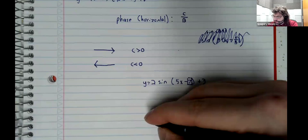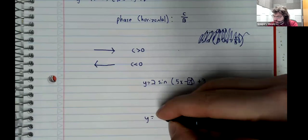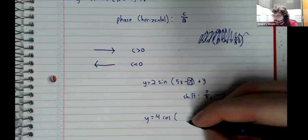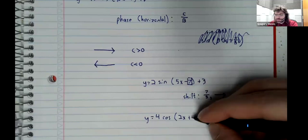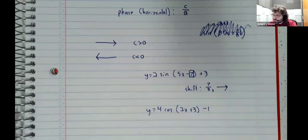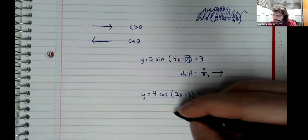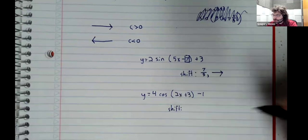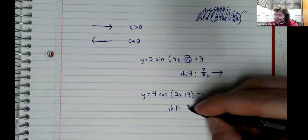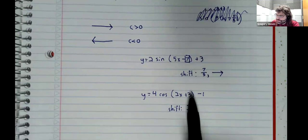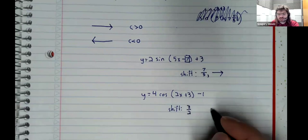Conversely, if we had something like this, the shift is 3 over 2 units, and the shift is to the left.